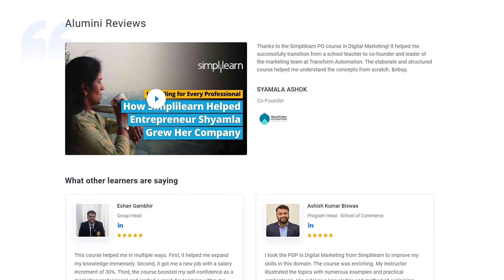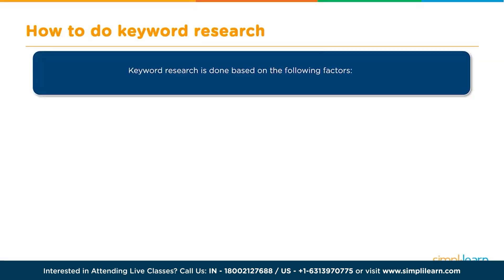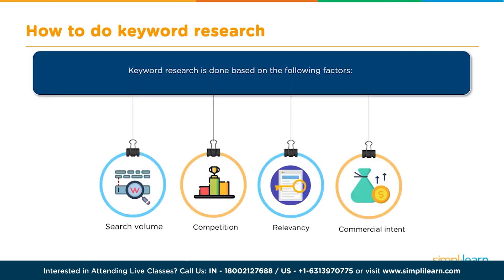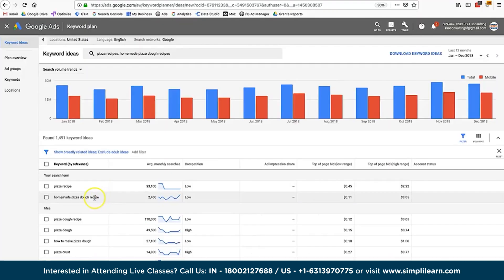Let's begin and start understanding how to use Google Keyword Planner and how to do proper keyword research. We looked at Google's Keyword Planner tool in Google Ads and typed in two keywords to get a sense of average volume. We want to choose keywords based on search volume, which is a good indicator of potential traffic. For the keyword 'homemade pizza dough recipe', it averages 2,400 a month in search volume.